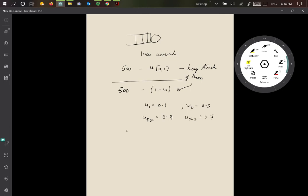So these two variables, u1, u2, etc., to u500, and then u501 all the way up to u1000, these are called antithetic variables.